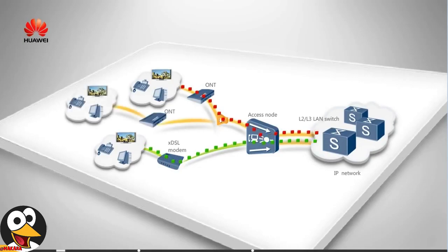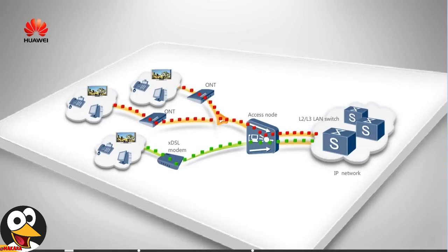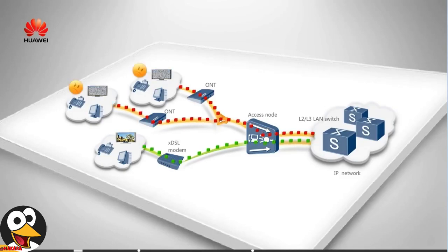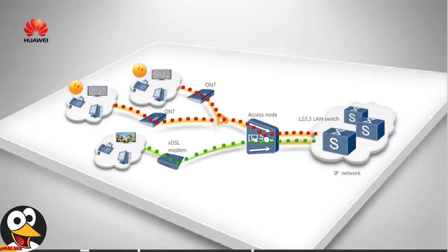As Internet and streaming media services become more and more popular, the number of broadband users and the required bandwidth increase greatly. In this case, network congestion occurs occasionally due to bandwidth insufficiency on uplinks of the access devices, which affects user experience. Furthermore, users are posing high requirements on network stability. If uplinks of the access devices are not protected, services will be interrupted once a fault occurs, seriously impairing user experience.